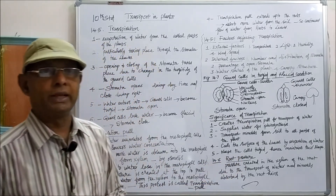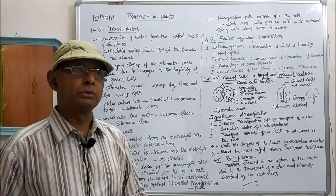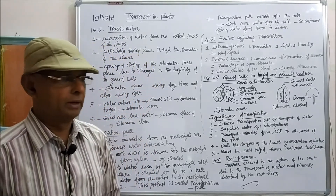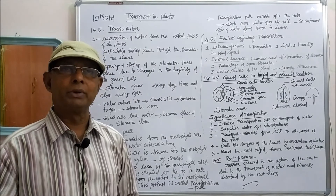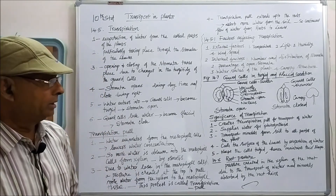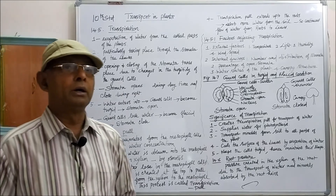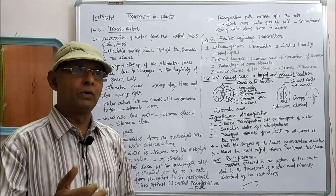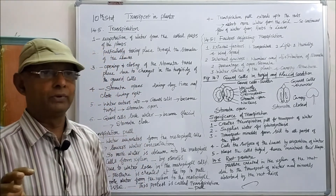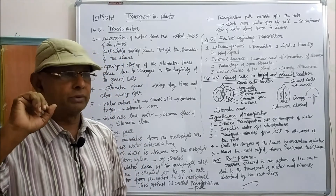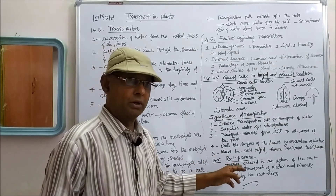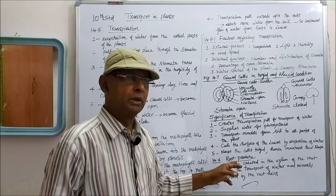Moving on to root pressure: there is a pressure created in the xylem of the root due to the continuous supply of water to the xylem from the root hairs. Root hairs absorb water and minerals from the soil, and the absorbed water reaches the leaf through the stem. When water reaches the xylem of the root, a pressure is created in the xylem of the root, which forces water upward to the aerial parts of the plant. That pressure is called root pressure.